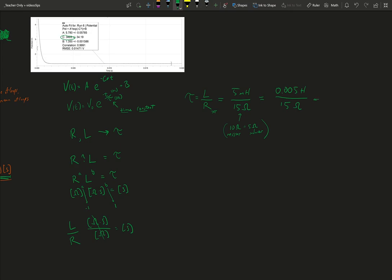We've already established that a Henry divided by an ohm gives us seconds. I'll let OneNote give me a little bit of calculation help here. 0.005 divided by 15. So this is 0.0003 seconds.